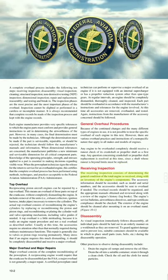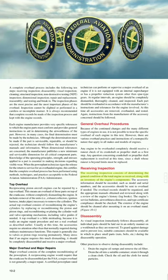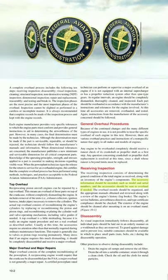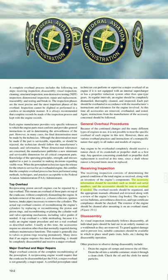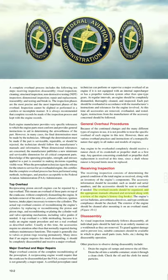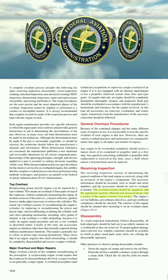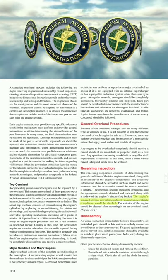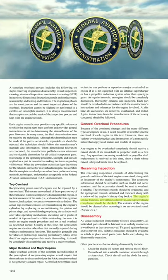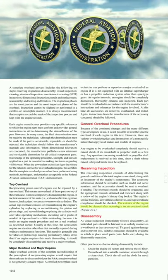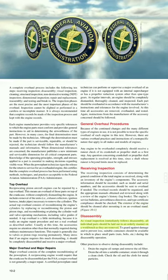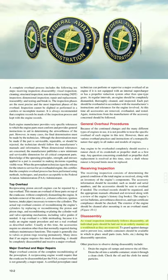Receiving inspection: The receiving inspection consists of determining the general condition of the total engine as received, along with an inventory of the engine's components. Accessory information should be recorded, such as model and serial numbers, and the accessories should be sent to overhaul if needed. The overhaul records should be organized and the appropriate manuals obtained and reviewed, along with a review of the engine's history log books. Engine service bulletins, airworthiness directives, and type certificate compliance should be checked. The exterior of the engine should be cleaned after mounting it on an overhaul stand.